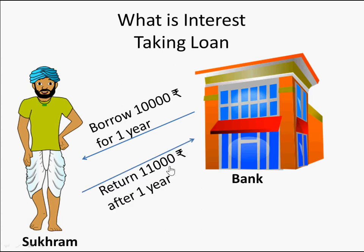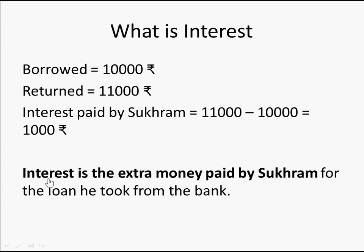The bank manager says, 'That's fine, I'll give you 10,000 rupees for one year, but you need to return 11,000 rupees after one year.' So Sukram borrowed 10,000 rupees for one year from the bank — that is the loan — and he returns 11,000 rupees after one year. He borrowed 10,000 rupees but has to return 11,000 rupees. The extra money he paid is 11,000 minus 10,000, which is 1,000 rupees.